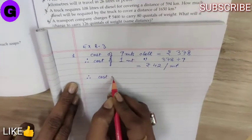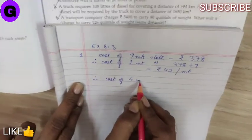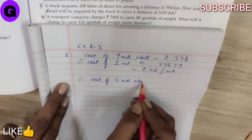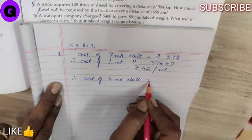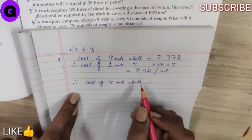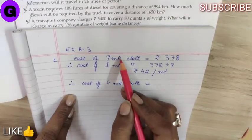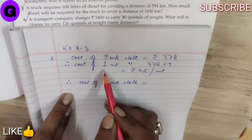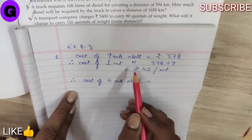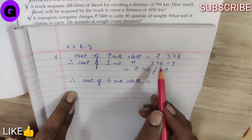cost of 4 meters cloth will be, now let me remind you once again, 9 meter, whatever it costed, 1 meter cloth will cost less. In that case,